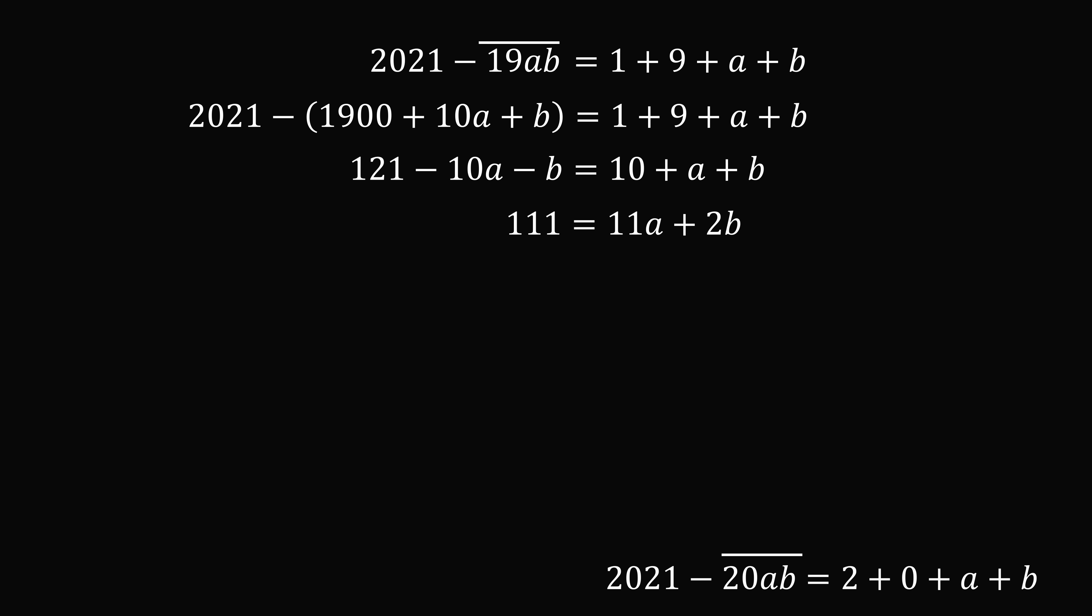Where do we go from here? 111 is an odd number, and since b is an integer, 2b is always an even integer. So, we have an odd is equal to something plus an even. That means 11a has to be an odd number. Now, a is a digit between 0 and 9, and 11a has to be odd. So, a has to be equal to 1, 3, 5, 7, or 9. So, 11a is equal to 11, 33, 55, 77, or 99.